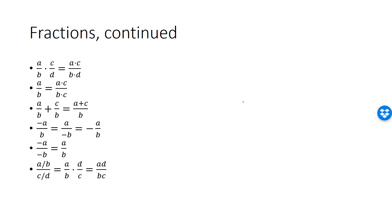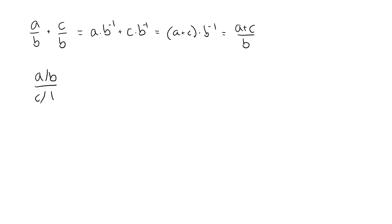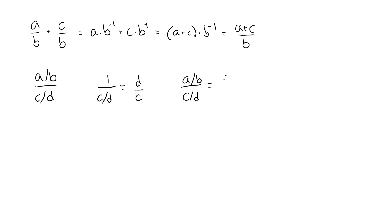Next, the ratio of two fractions: A over B divided by C over D. First, the inverse of a fraction C over D is equal to D over C — the numerator and denominator switch places. The ratio of two fractions can be converted into a product: the numerator fraction multiplied by the inverse of the denominator fraction. So A over B divided by C over D equals A over B times D over C, which we can also write as AD over BC.